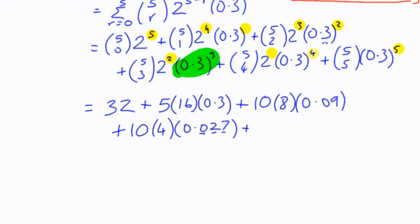The next one, we've got 5 times 2, and 0.3 to the power 4. 3 to the power 4 is 81. We've got to have 4 decimal places, 0.0081. And in the last term, 5 choose 5 is 1, 0.3 to the power 5. 3 to the power 5 is 3 times 81, which is 243. It's got to have 5 decimal places.